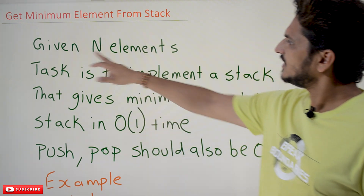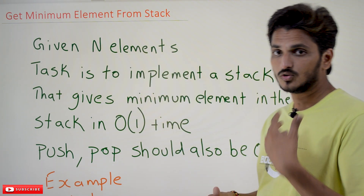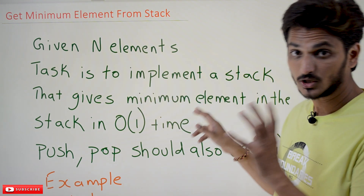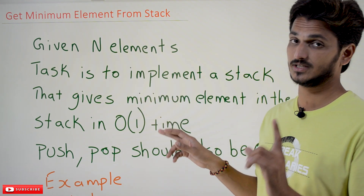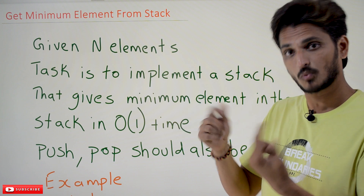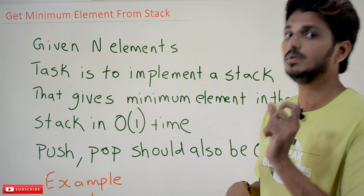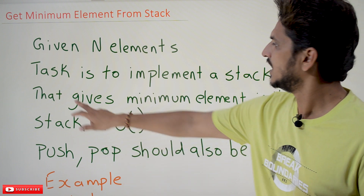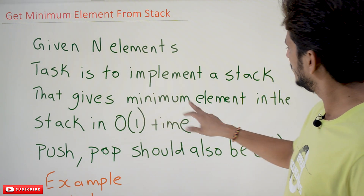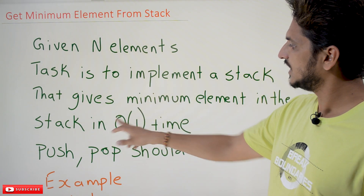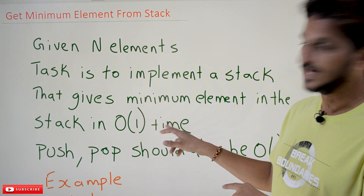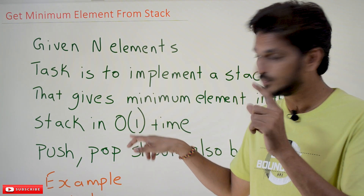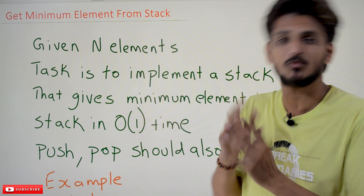Coming to today's class: given n elements, the task is to implement a stack. We need to implement a stack that should have push operation, pop operation, and get min operation — an extra operation. Get min operation gives the minimum element in the stack in big O of one time.